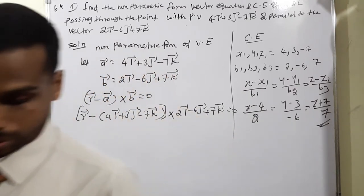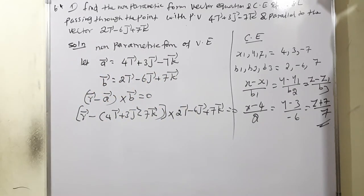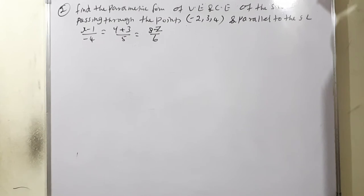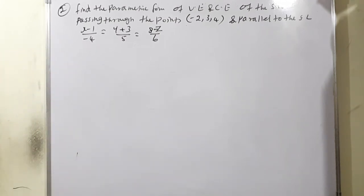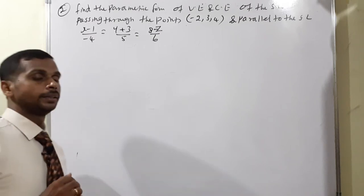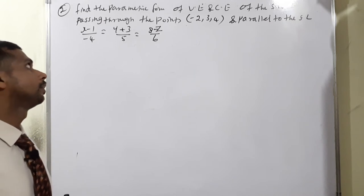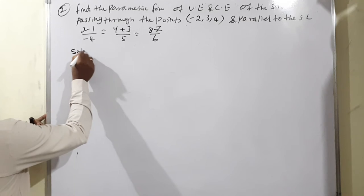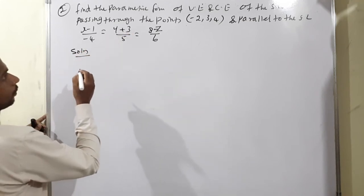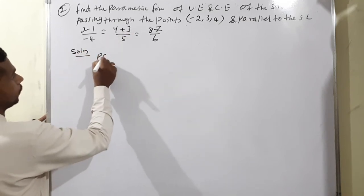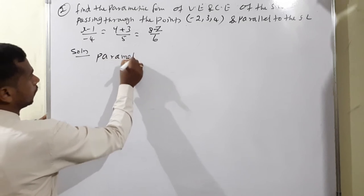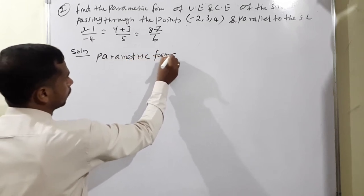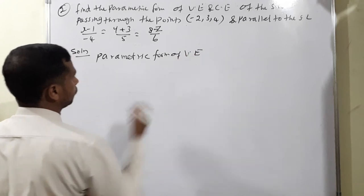I will continue to the next question. Question number 2 from exercise 6.4: find the parametric form of the vector equation and the Cartesian equation. Question 1 was non-parametric form; question 2 is slightly different — parametric form.